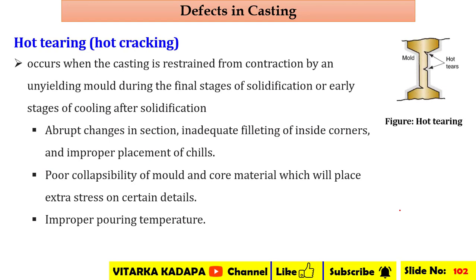Next is hot tearing. Hot tearing occurs when the casting is restrained from contraction by an unyielding mold during the final stage of solidification. During early solidification in the mold, cracks may appear on the top surface. The reasons include abrupt changes in section, inadequate filleting of inside corners, and improper placement of chills.